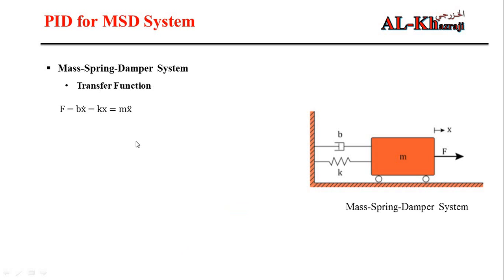Rearranging this equation: F, which is the input to the system, equals M (the mass) multiplied by the second derivative of position (the acceleration), plus B (the damping coefficient) multiplied by velocity (the first derivative of X), plus K (the spring constant) multiplied by X (the position).